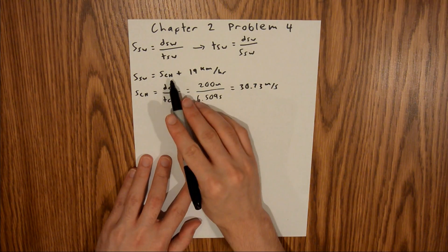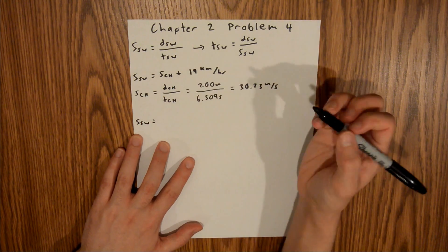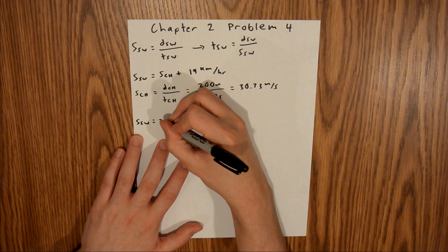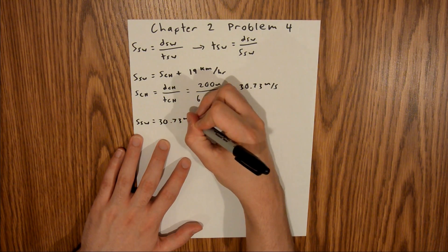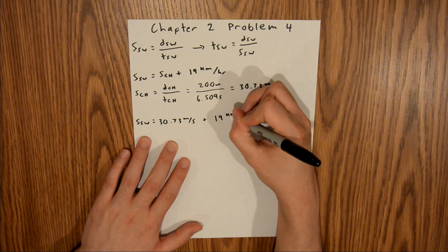Now we can take this speed and plug it in. So the speed of SW is equal to the speed of CH, which we just found to be 30.73 meters per second plus 19 km per hour.